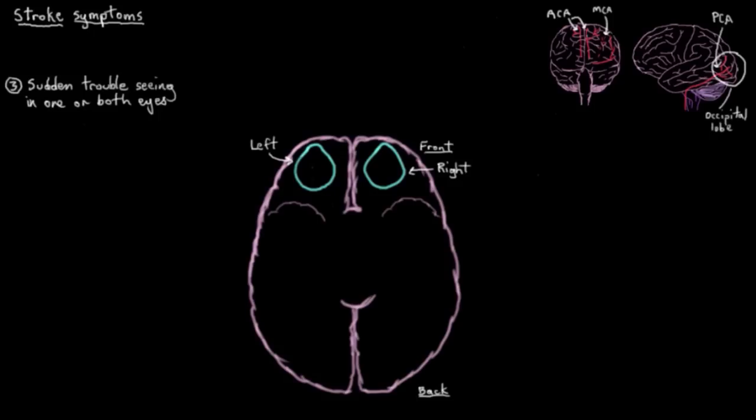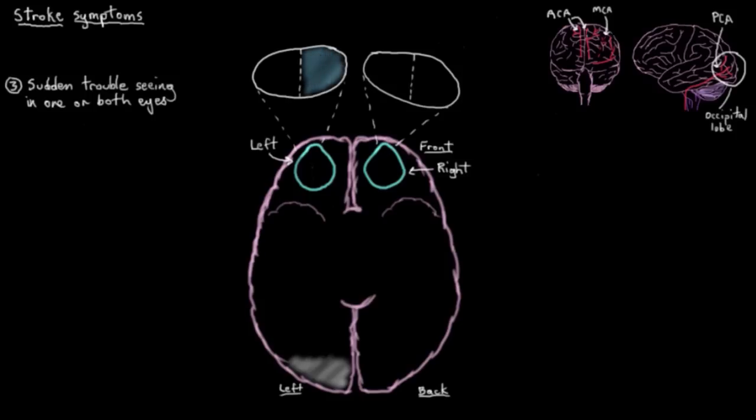You could actually end up with some vision loss. And the occipital lobe is also wired up in an interesting way. Where actually let me just draw out the two fields of vision to make this really clear. So here's your left field of vision from your left eye. And here's your right field of vision from your right eye. So if you sustain some damage to this left side of the occipital lobe, you actually end up with loss of vision in the right halves of both your left and your right visual fields. That's weird right?